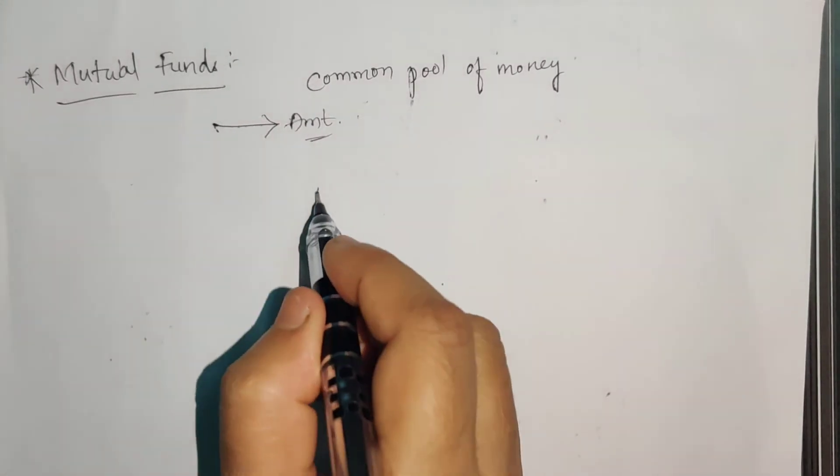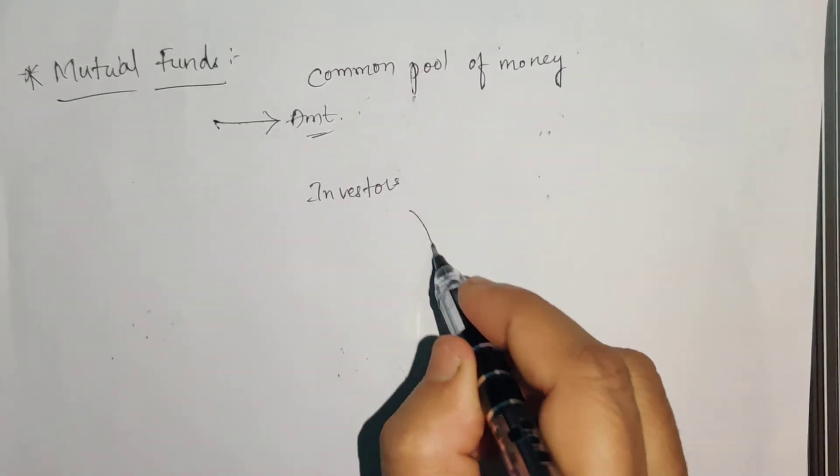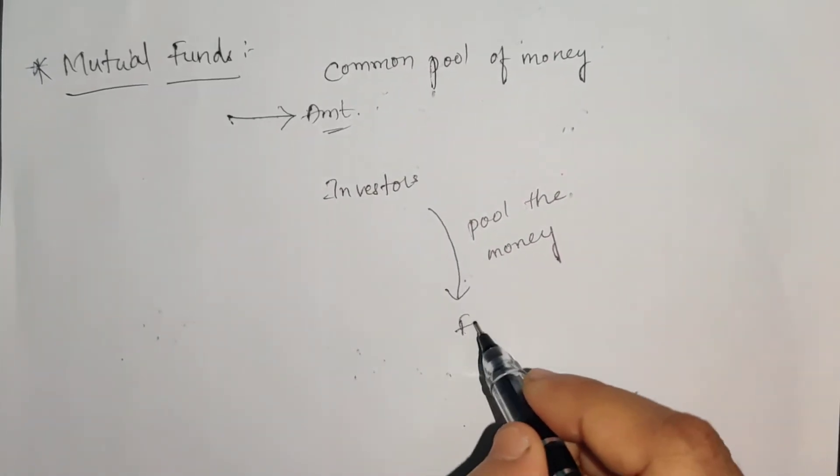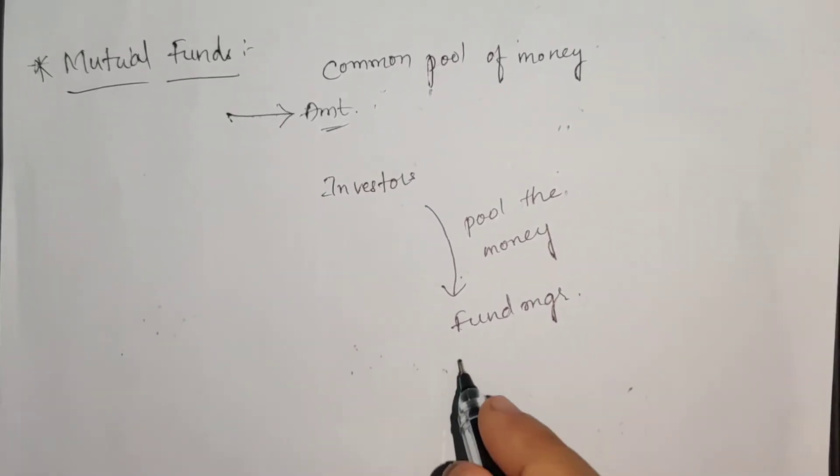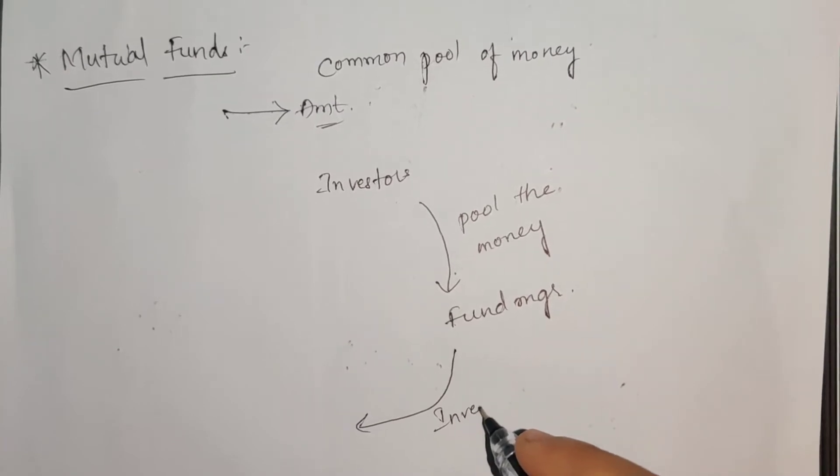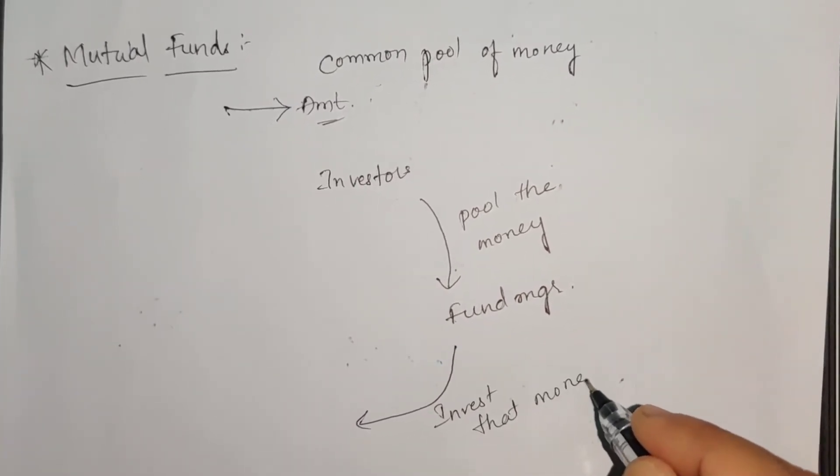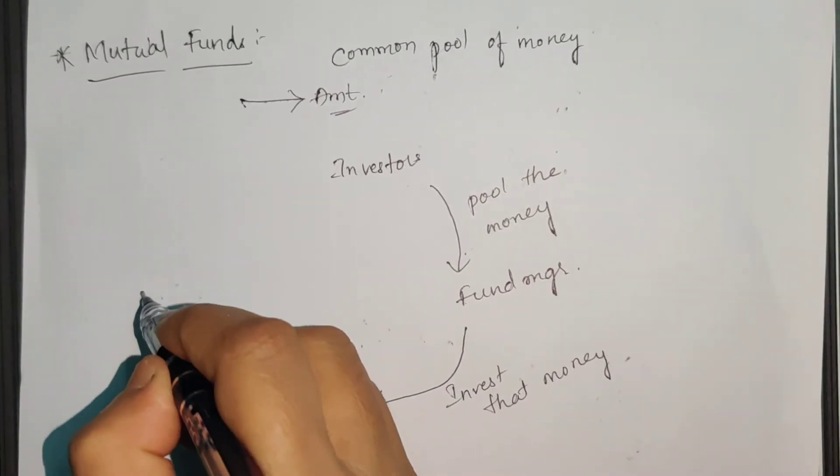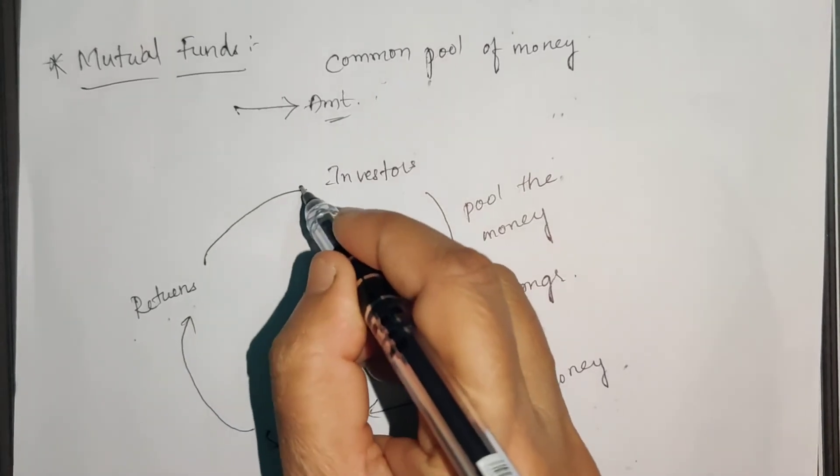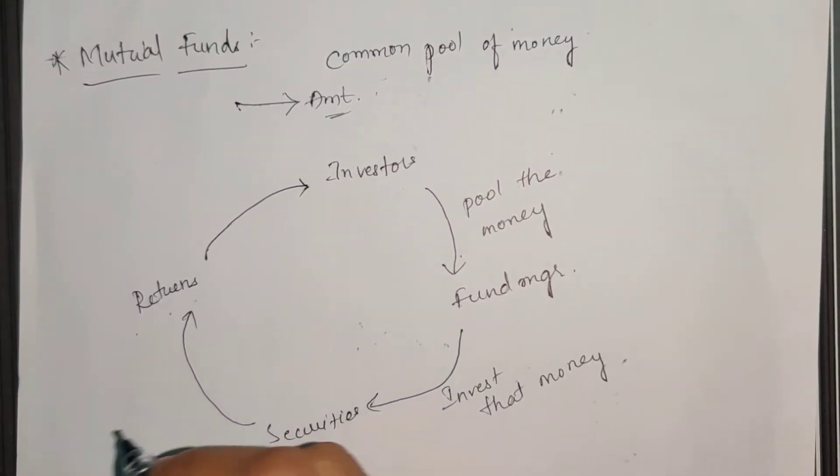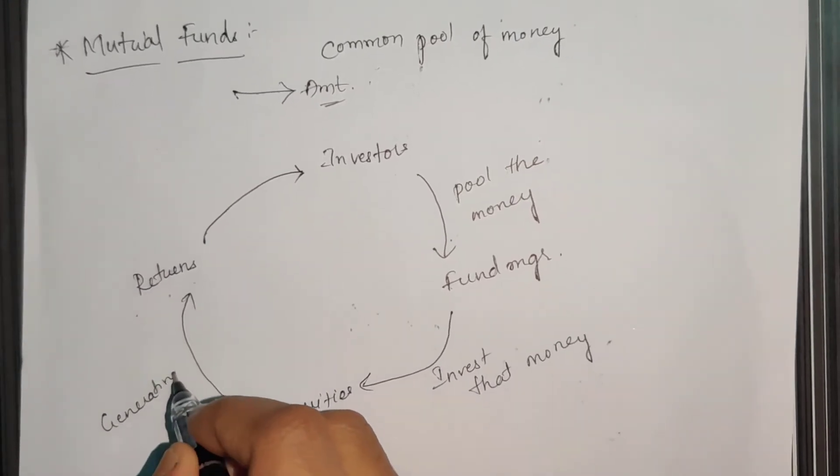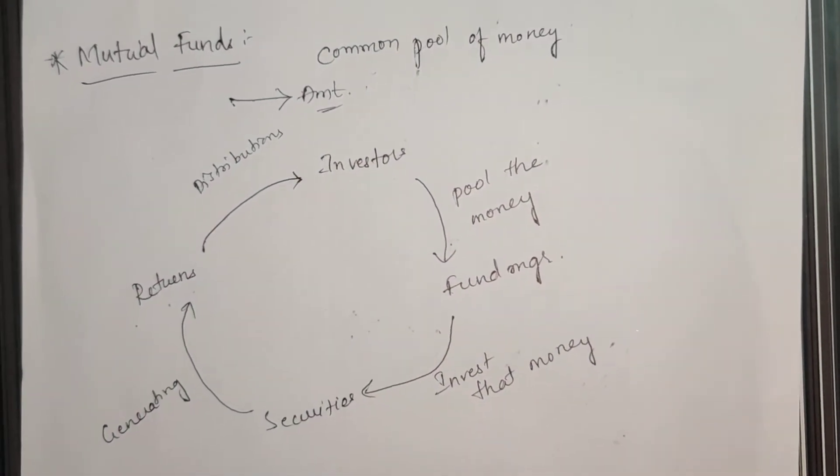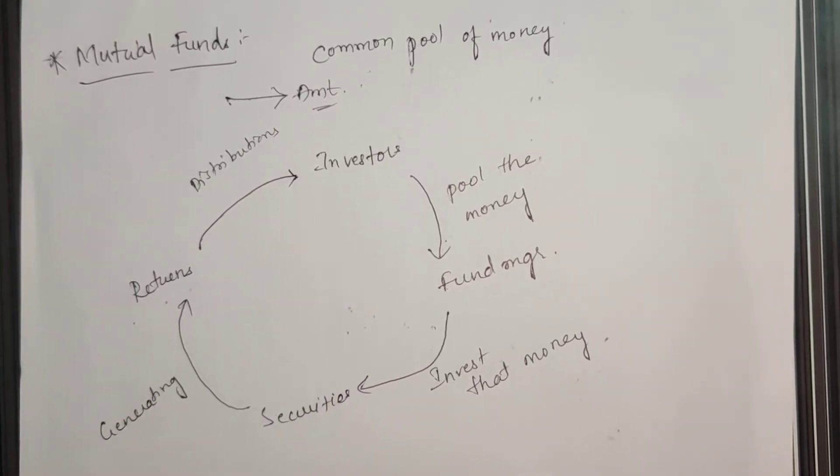How will it work? Investors pool the money, and the fund manager invests that money in securities. From those securities, they get returns, and those returns are distributed back to investors. This is a cyclical process: pooling money, investing, generating returns, and distributing returns to investors.